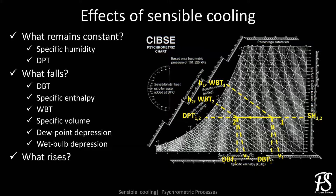The psychrometric property that sees a rise in its value is relative humidity — relative humidity of air increases as it moves closer to the saturation line.